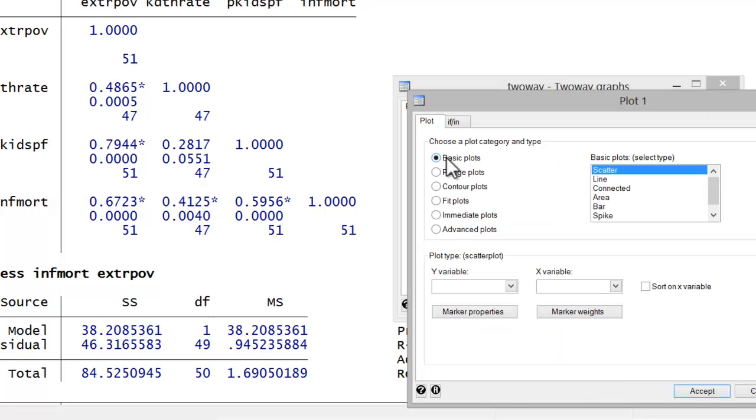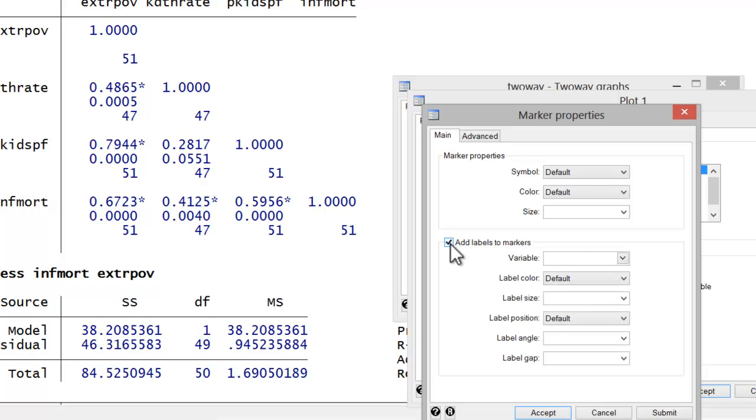So let's get started. You'd select Create. And for the scatter plot, we're just going to stick with Basic Plots and Scatter. Now, in the Y variable, we'll put our dependent or outcome variable. In this case, let's look at infant mortality. And the X variable would be our independent or causal variable. In this case, let's look at extreme poverty. Now, with the scatter plot, it's often nice, particularly if you have a small data set dealing with cities or states, to actually include a label of those cities or states next to each plotted point. To do that, go to Marker Properties, select Add Labels to Markers, and choose the variable that includes that information. I actually have a variable called State that includes the abbreviation for each state.